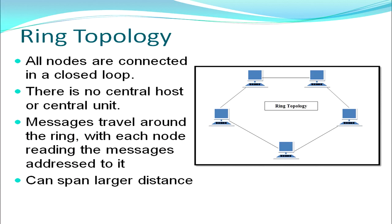Next is ring topology. Just like the shape of a ring, computers are connected end to end in a closed loop. There are no central hosts or central control units. Messages travel in the form of a ring — if A wants to send a message to B, it travels across the ring until B receives it and the rest ignore it. This network can span over larger distances since computers are connected end to end.